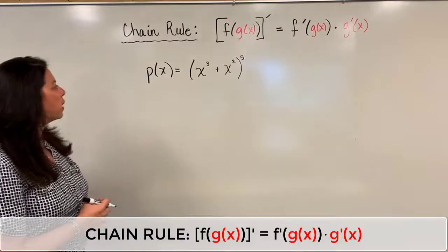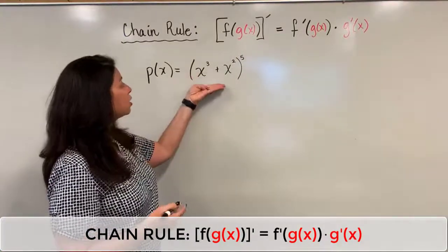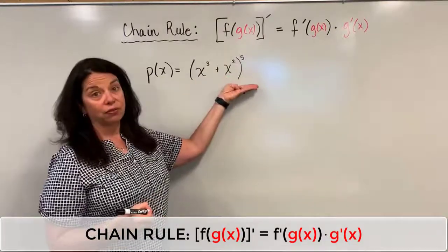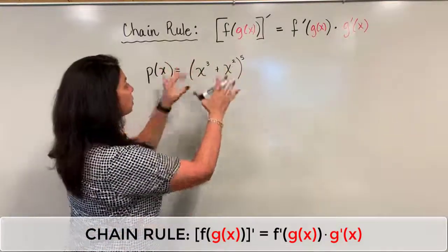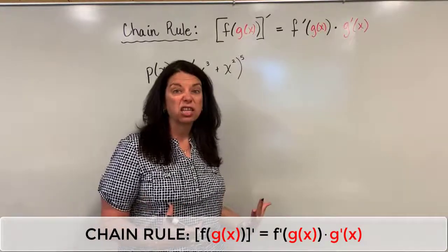So this video I'm going to showcase this example: p of x equals the quantity x cubed plus x squared to the fifth power. This is all a bunch of power rules here and we actually have an inside function and an outside function.